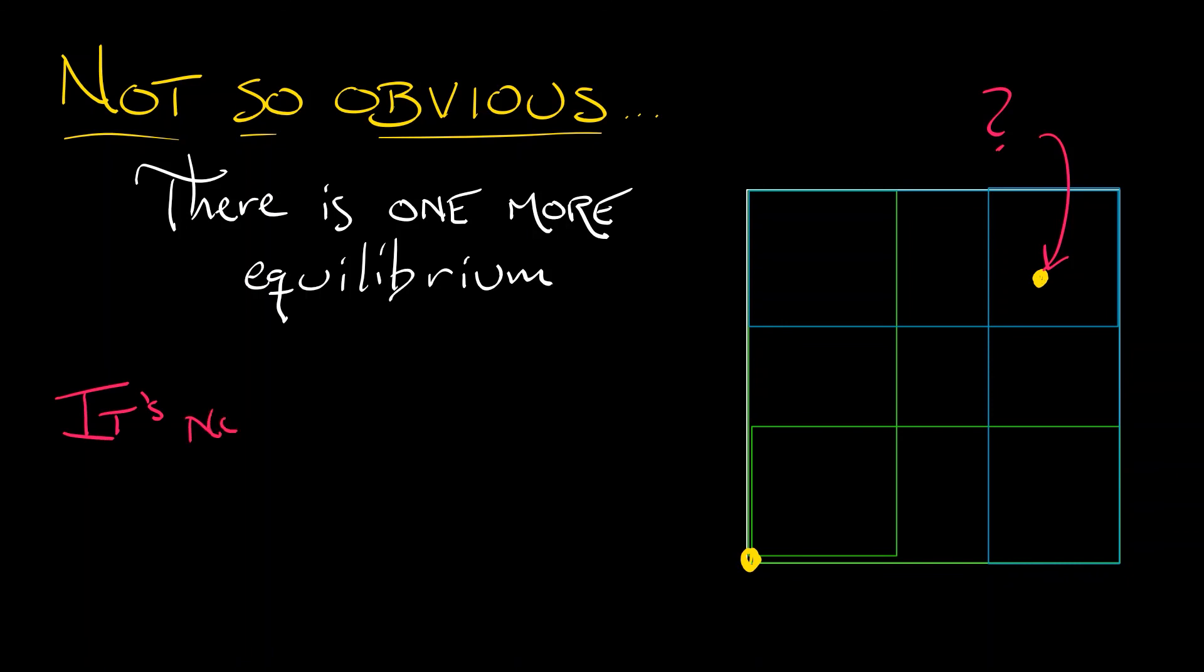And it, too, is a saddle. Now, it's not exactly obvious that that equilibrium has to exist. And it's certainly not clear exactly where it's located. But it is there.